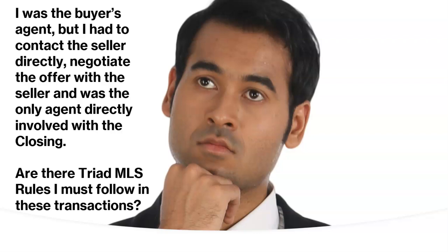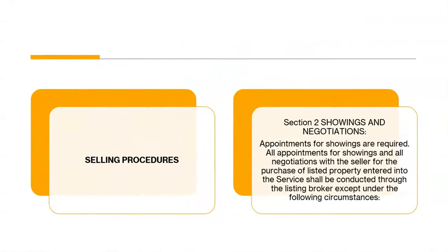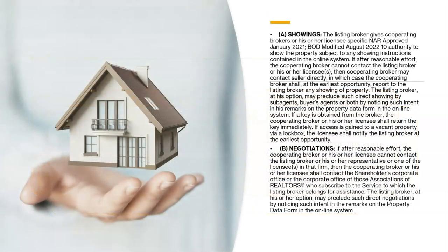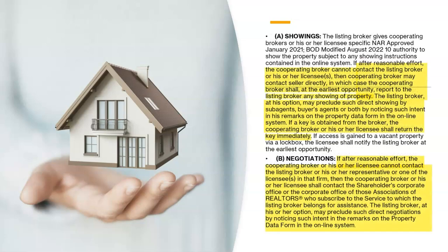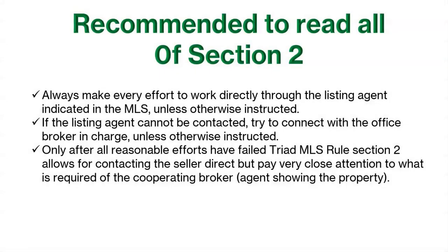Here is a scenario all Triad MLS participants and subscribers need to be aware of: I was the buyer's agent, but I had to contact the seller directly, negotiate the offer with the seller, and was the only agent directly involved with the closing. Are there any Triad MLS rules I must follow in these transactions? Yes, and they are spelled out in Section 2 of the Rules and Regulations — the Selling Procedures. Appointments for showings are required. All appointments for showings and all negotiations with the seller for the purchase of listed property shall be conducted through the listing broker, except under the following circumstances spelled out in Section 2A. If after reasonable effort the cooperating broker cannot contact the listing broker or his or her licensee, then the cooperating broker may contact the seller directly. Section B addresses how to handle negotiations. It is highly recommended that all participants and subscribers read Section 2 very carefully.